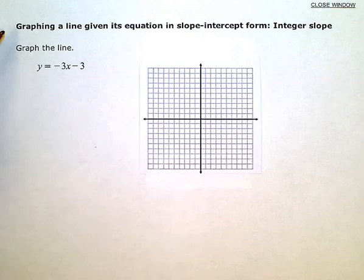Graphing a line given its equation in slope-intercept form, integer slope. So my instructions here say to graph the line. They gave me an equation: y equals negative 3x minus 3.